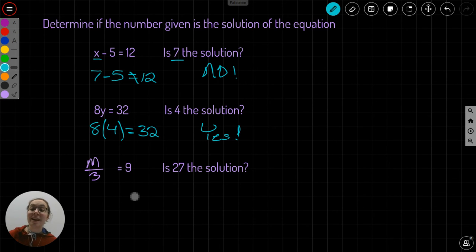M over 3 equals 9. M over 3 is division. Fractions mean division. Fractions are division, top divided by bottom. So is 27 the solution to M divided by 3 equals 9? Let's check. 27 over 3 equals 9.